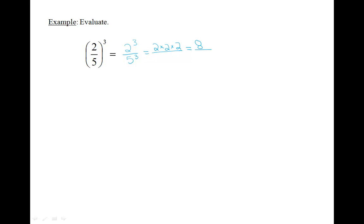over 5 to the power of 3, is the same as writing 5 times 5 times 5 in the denominator, which equals 125. So your final answer is 8 over 125.